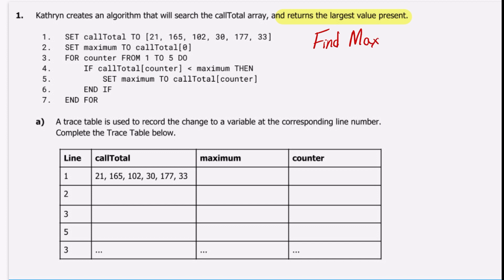At the end of this algorithm we should know the maximum call total value. The question says a trace table is used to record the change to a variable at the corresponding line number — complete the trace table below. It's already partially completed: on line one we set the call total to be 21, 165, 102, 30, 177, and 33. On line two we set the maximum to call total index zero, so the first value in our array, 21, becomes our maximum.